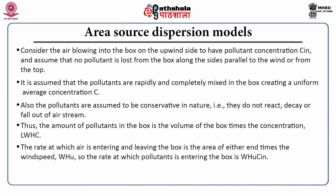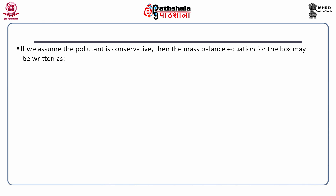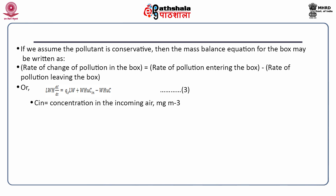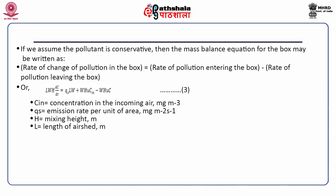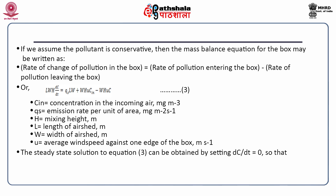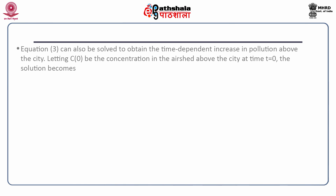The rate at which air is entering and leaving the box is the area of either end times the wind speed, W·H·U. The rate at which pollutants enter the box is W·H·U·C_in, and the rate at which it leaves is W·H·U·C. If the pollutant is conservative, the mass balance equation for the box is: rate of change of pollution in the box equals rate of pollution entering the box minus rate of pollution leaving the box, as in equation 3, where C_in is the concentration in the incoming air in milligrams per meter cubed, Q_S is the emission rate per unit area in milligrams per meter squared per second, H is the mixing height in meters, L is the length of the air shed in meters, W is the width of the air shed in meters, and U is the average wind speed against one edge of the box in meters per second. The steady-state solution to equation 3 is obtained by setting dC/dt equals 0, giving equation 4. Equation 3 can also be solved to obtain the time-dependent increase in pollution above the city, giving equation 5.